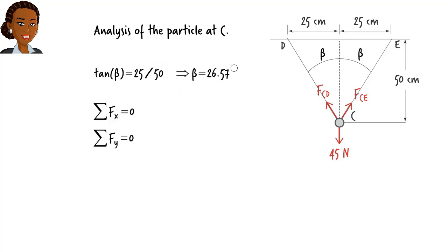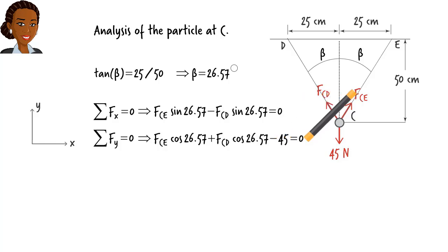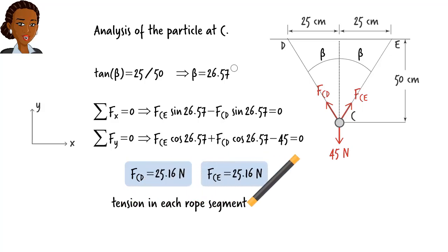Here we need to write two equilibrium equations, since we have forces with X and Y components. The net force in X direction must be zero, and the net force in Y direction must be zero. Assuming X is positive to the right, and Y is positive upward, we can write... Solving these equations for the unknown force magnitudes, we get... This means, for the pot to remain in place, each rope segment must carry a tension force of 25.16 Newtons.